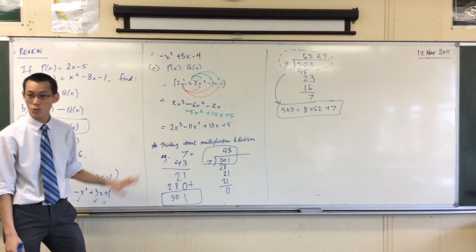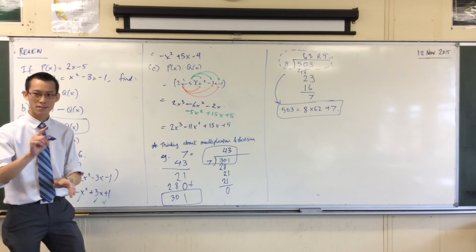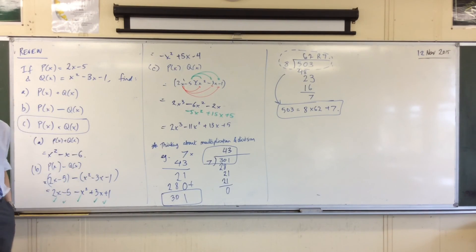Now, division with numbers, long division with numbers, we're okay with this. We're comfortable with this. But, we're in the polynomial land. So, how do we do this?